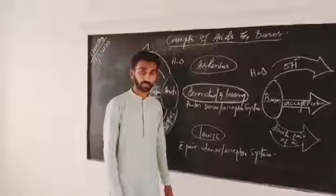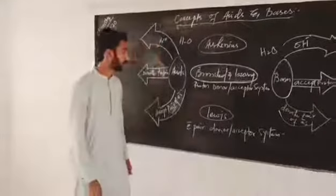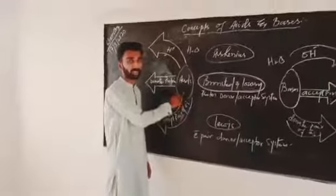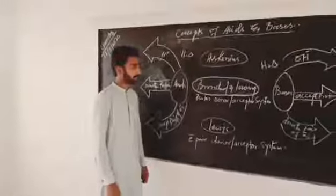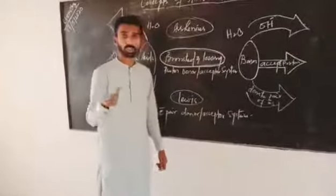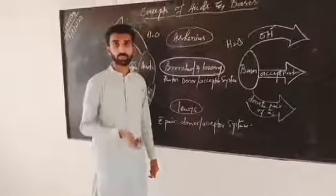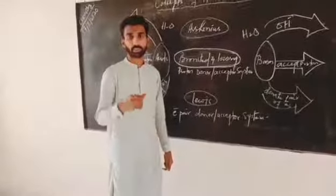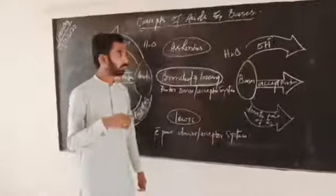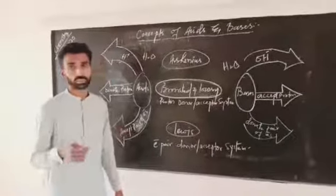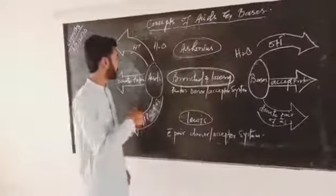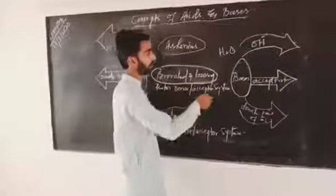The basic concept about acids is that acids are those substances that have a sour taste, like lemon, grapes, and oranges. They have a sour taste because they contain some organic acids like acetic acid and formic acid. There are so many organic acids present in them, so they have a sour taste.